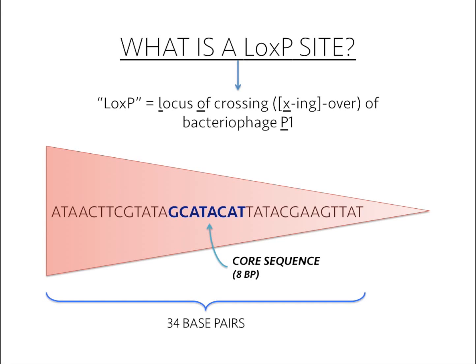In the middle of this 34 base pair sequence is an 8 base pair sequence known as the core sequence. The asymmetry of the sequence confers the directionality of the site, which conventionally is notated by the direction of the triangle points. This core sequence is where recombination occurs.